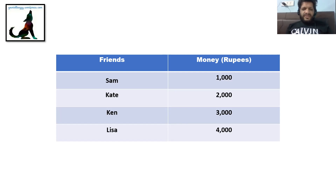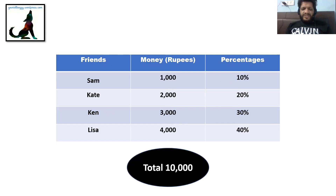The overall total here is 10,000 rupees. Calculating the percentages: Sam is 10%, Kate is 20%, Ken is 30%, Lisa is 40%. It's easier to say 40% than 4,000. If it's 4,000 out of 10,000 then it's 40 out of 100, which is 40%. Now even if I list all the percentages — 10, 20, 30, 40 — reading them still takes time. An easier step is having a picture in front of you that conveys everything at once.